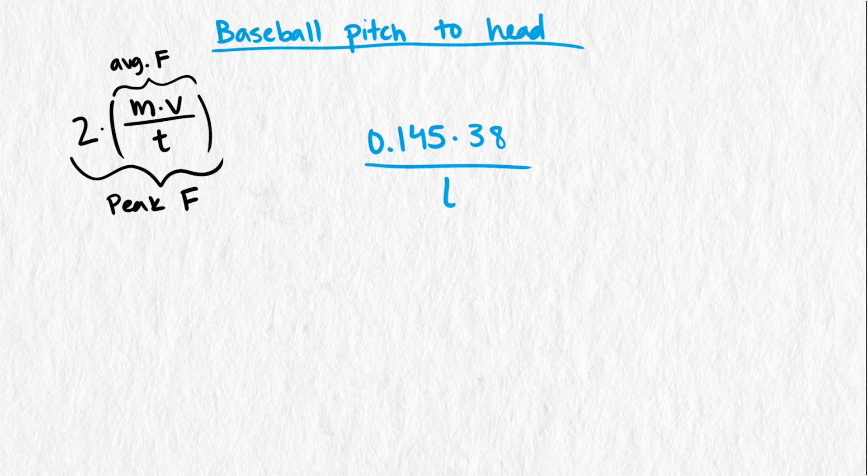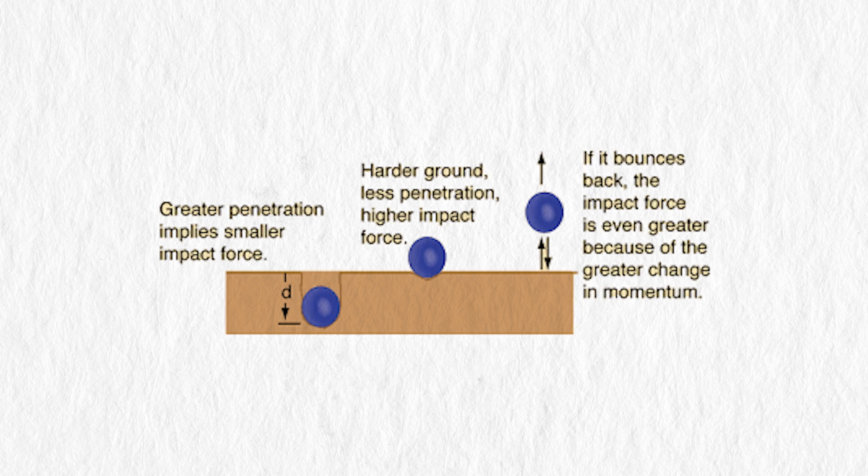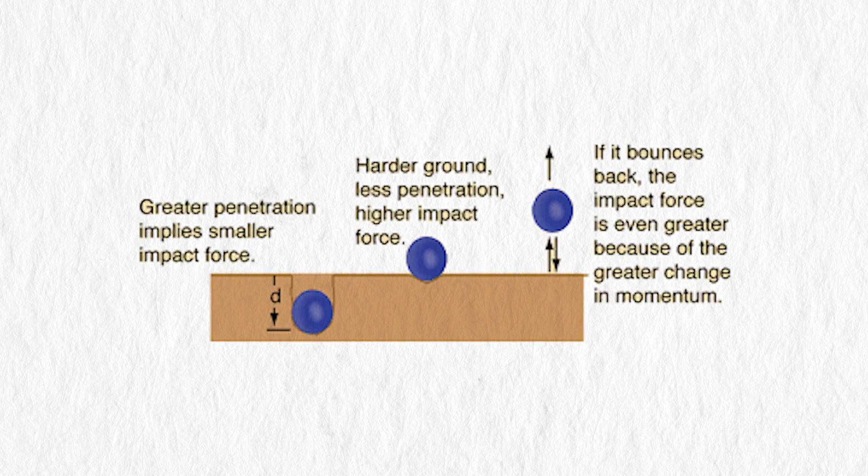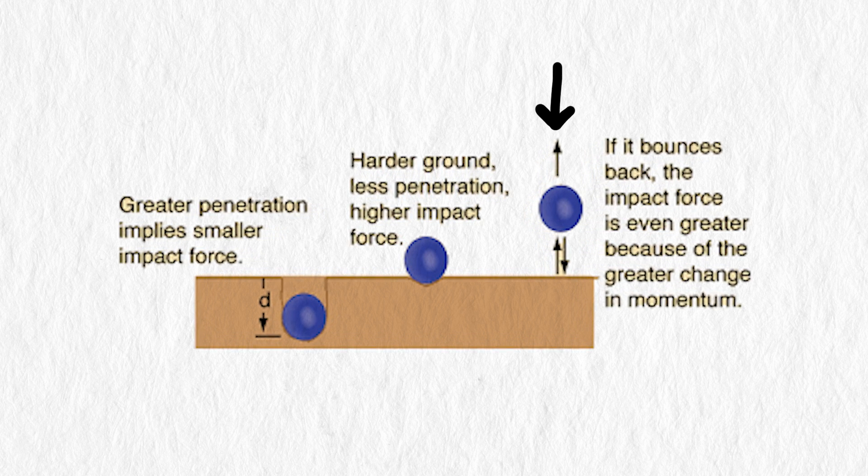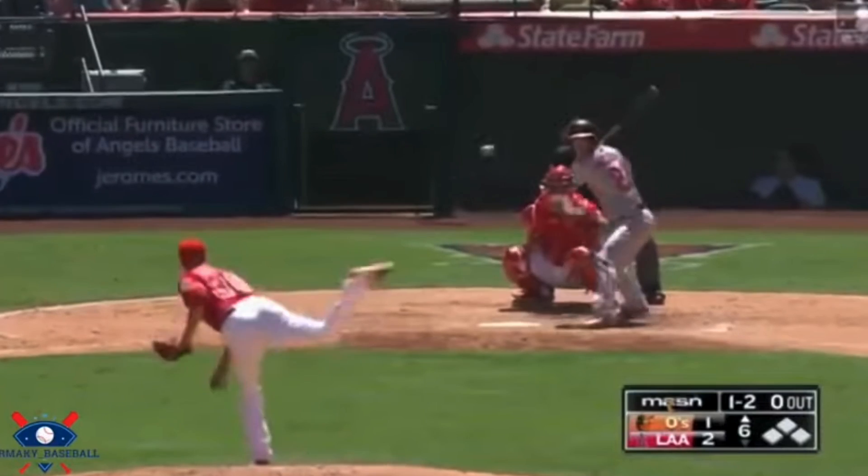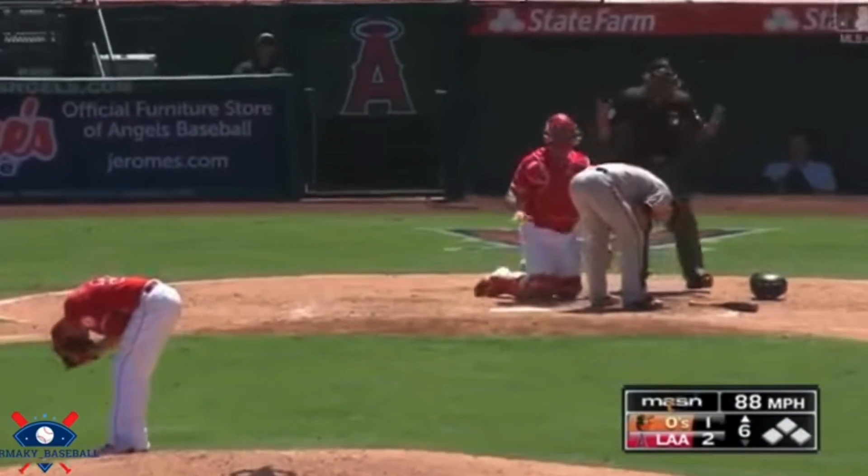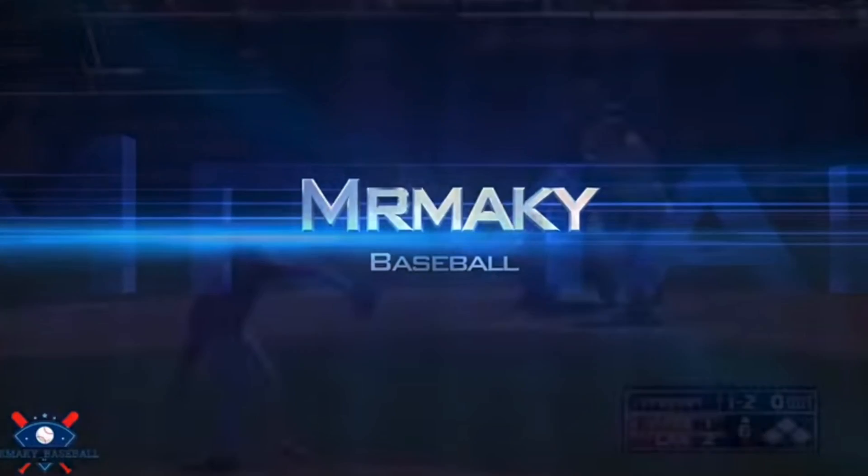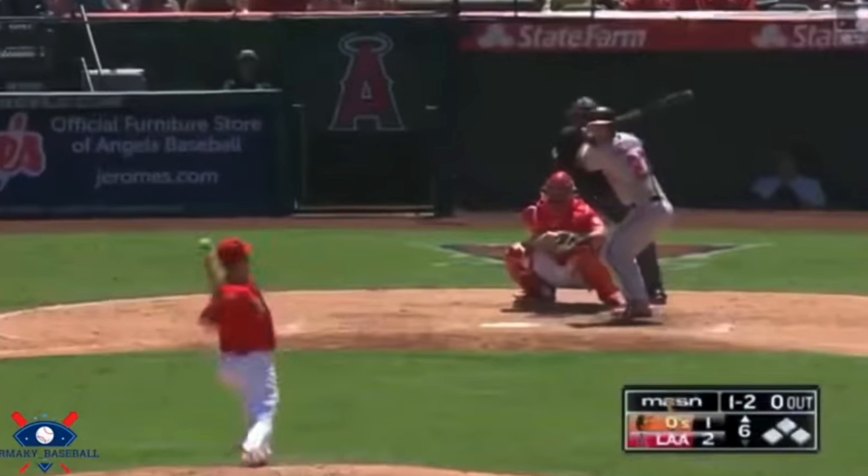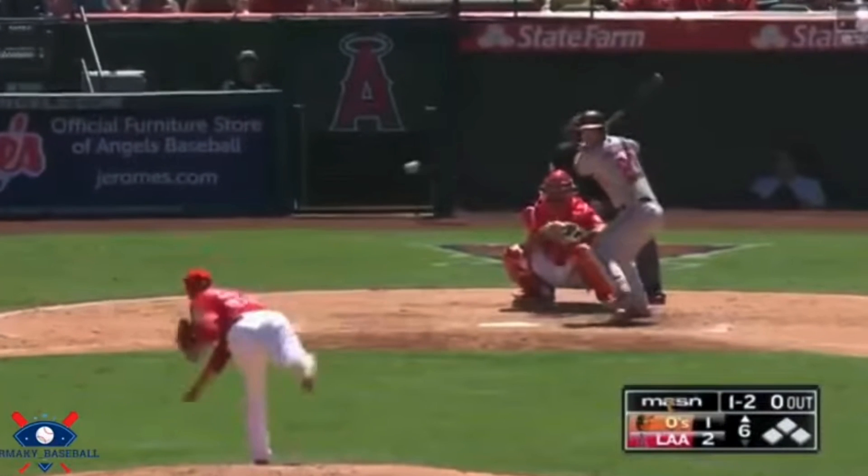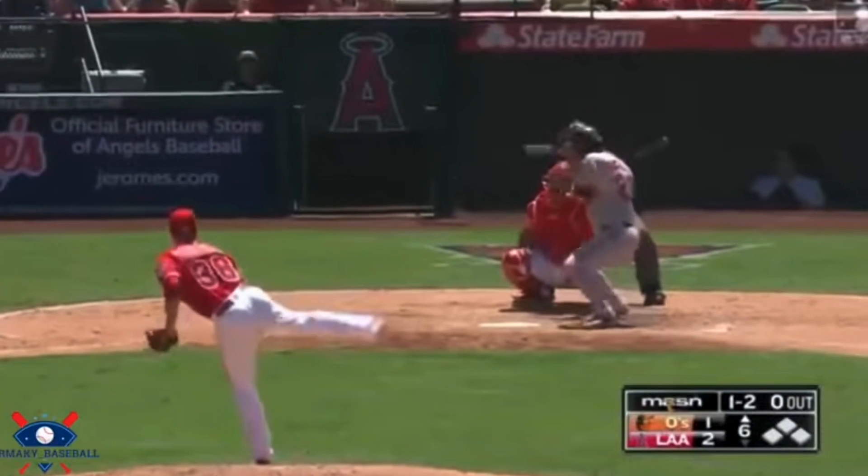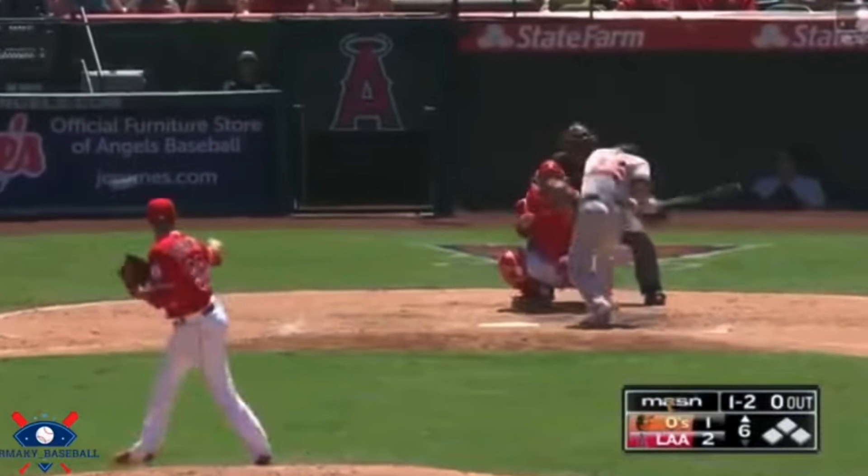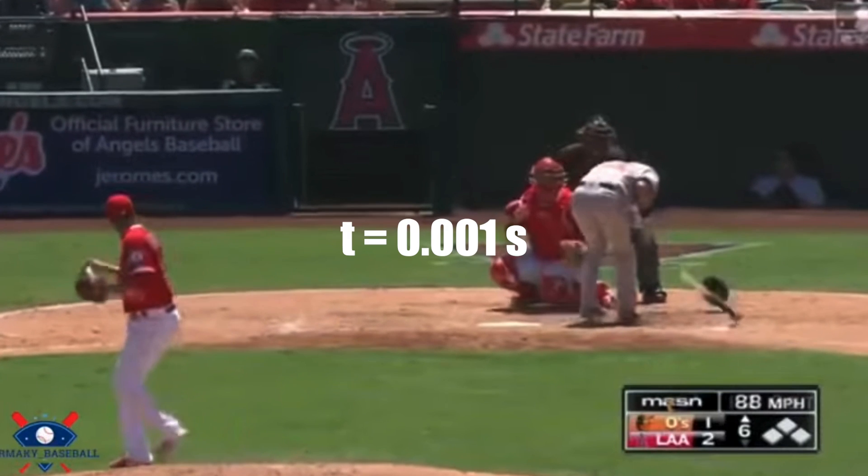Lastly, we need the length of time the two objects stay in contact. Baseballs are very hard, and human heads are also pretty hard, so the contact time is going to be pretty short. In this more recent clip of a batter getting hit in the head by a pitch, the contact happened so fast my software could not capture the exact moment of contact. The closest I could get was 0.01 seconds, but it was obvious it was even faster than that, so let's estimate it as 0.001 seconds.